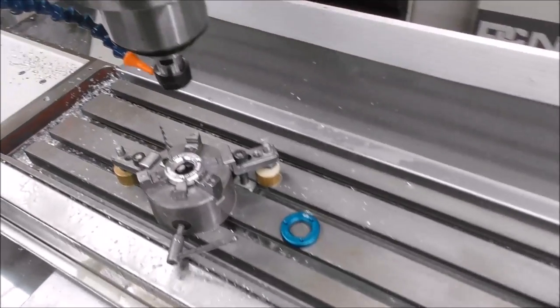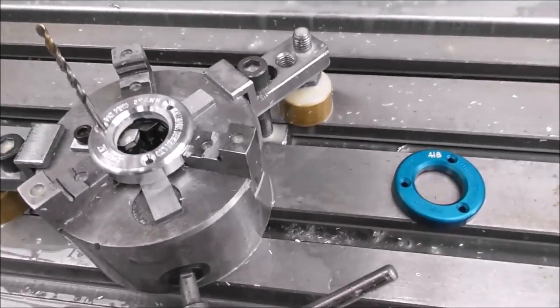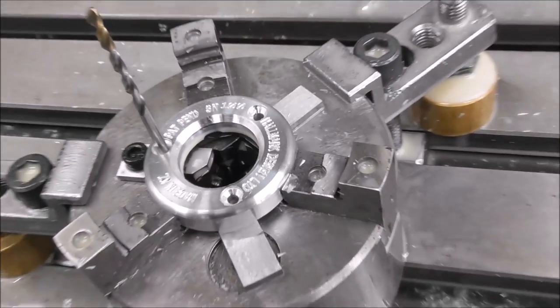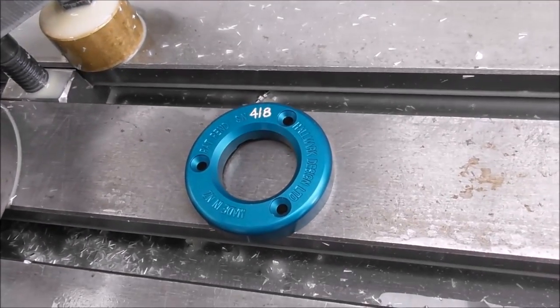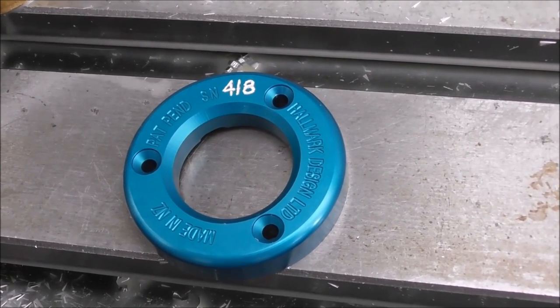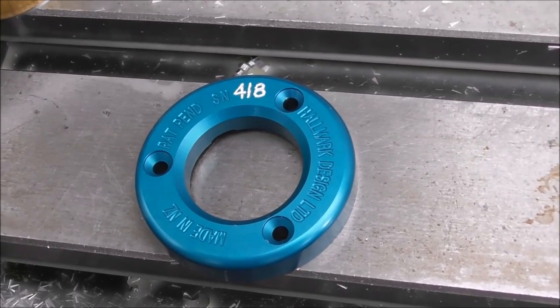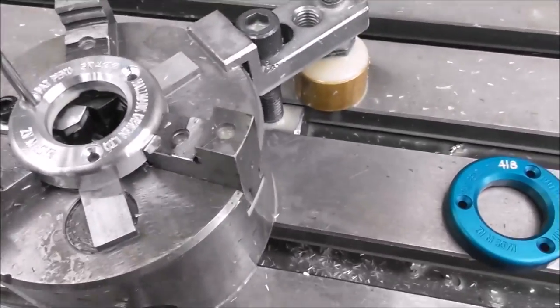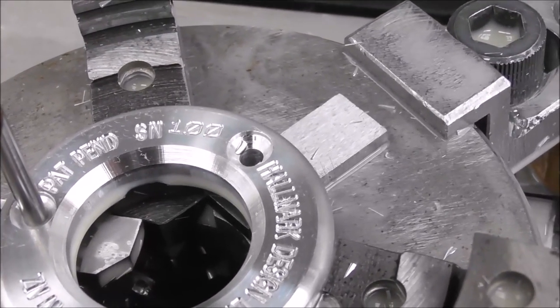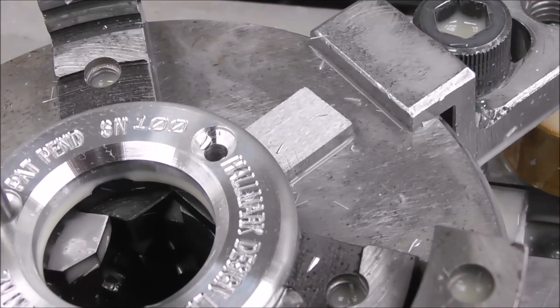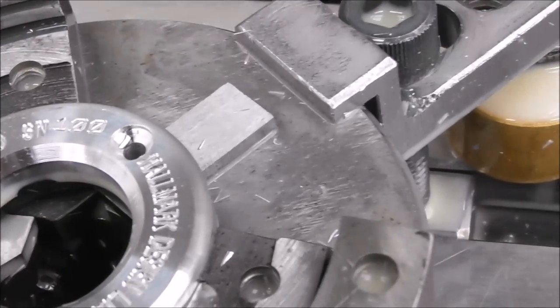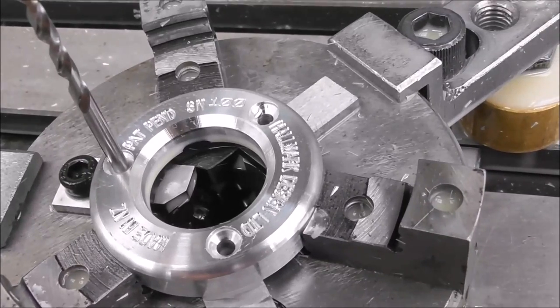Here I'm engraving the end caps and at the same time machining the countersinks for the cap screws and the central chamfer. And when I did the first production run of the end caps in October 2016, I just left a blank space for the serial number and just hand engraved it. And that's okay for doing a few but I wanted a better system for the bigger production runs that I'm now doing.